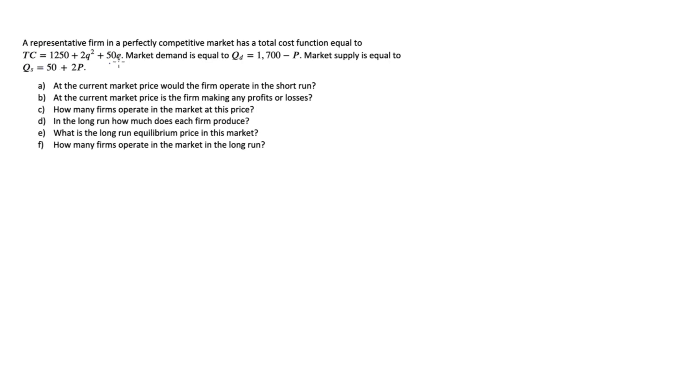So here's our question. A representative firm in a perfectly competitive market has a total cost function: TC equals 1250 plus 2Q squared plus 50Q, where the small Q refers to firm quantity. Market demand is given by Q_D equals 1700 minus P, where large Q indicates market quantity and P stands for price. Market supply is Q_S equals 50 plus 2P.